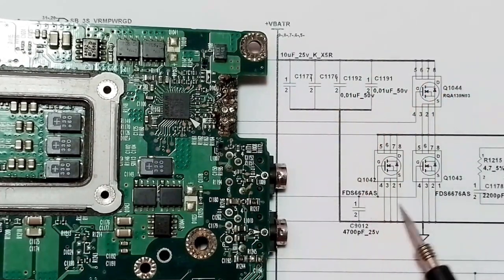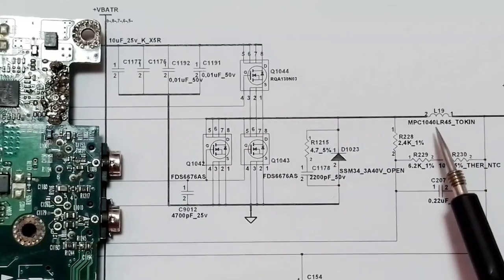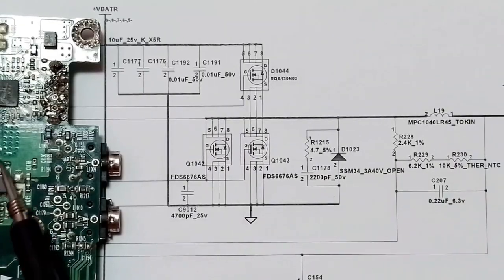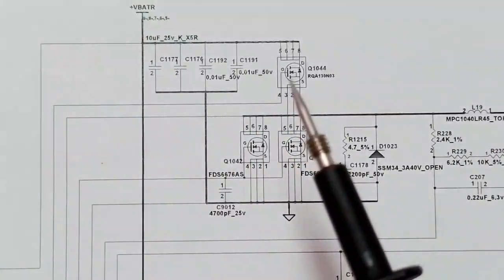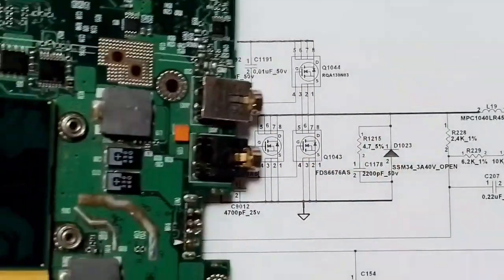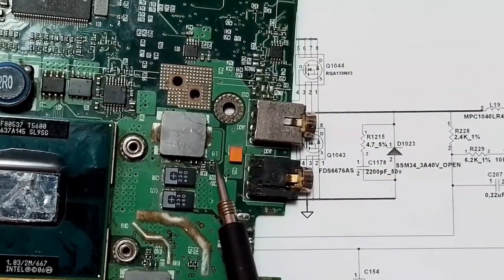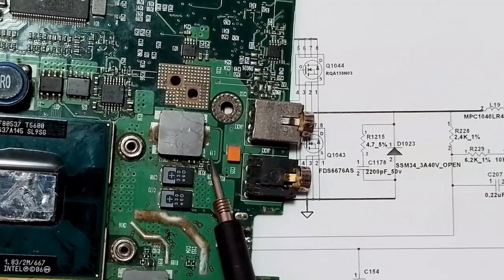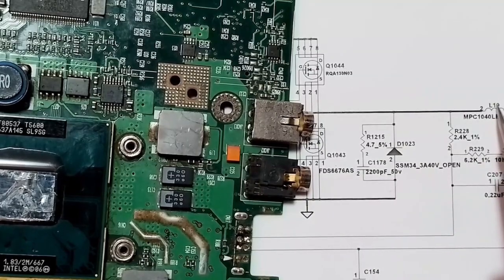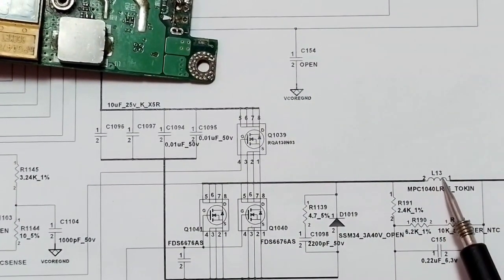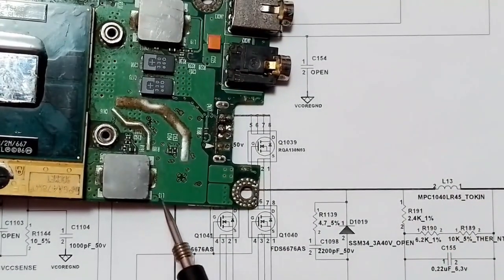We have three MOSFETs, and here also we have three MOSFETs. Then we have inductor L19 on the other side. And for the second inductor we have L30.